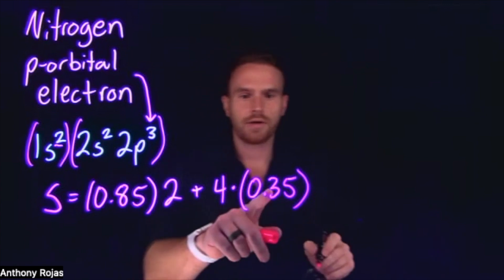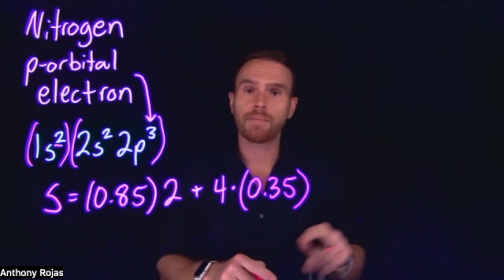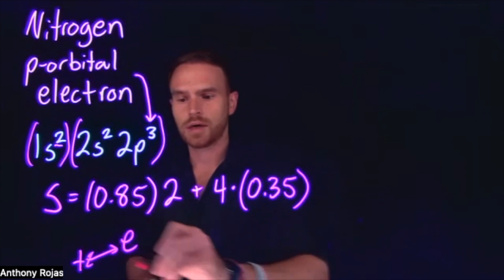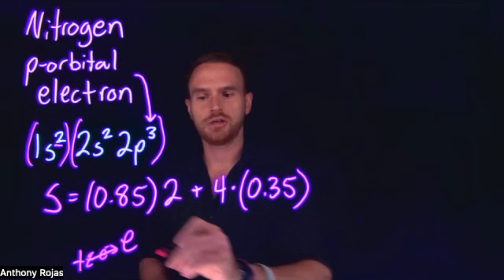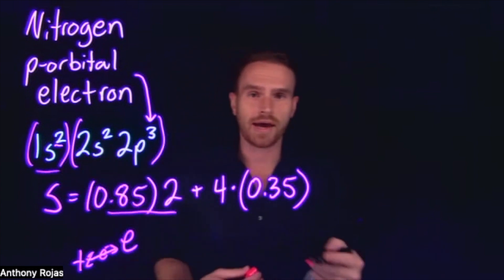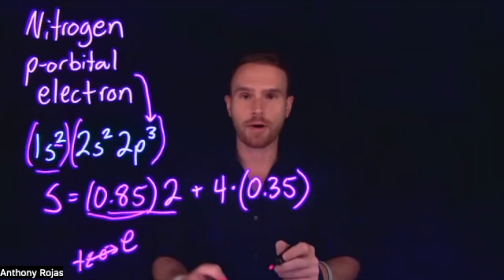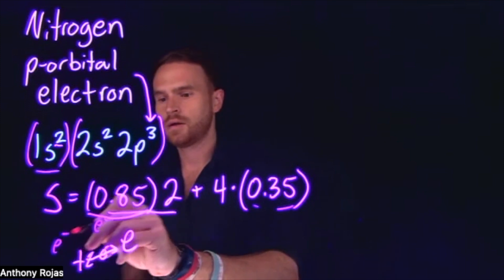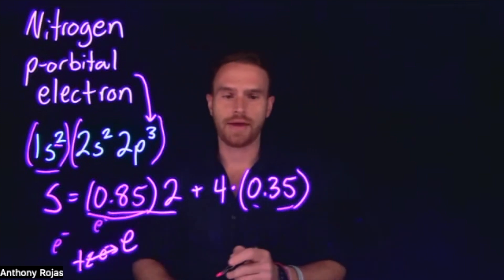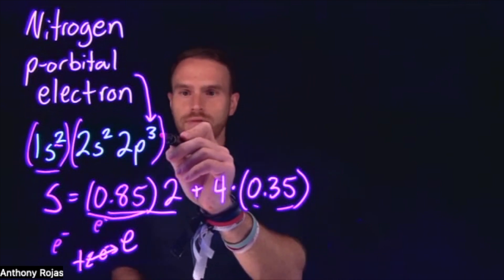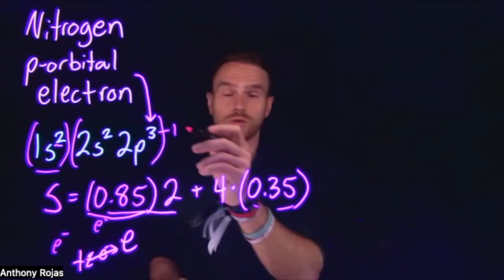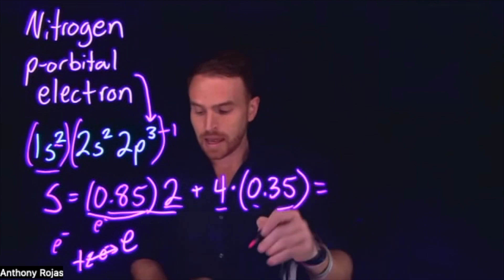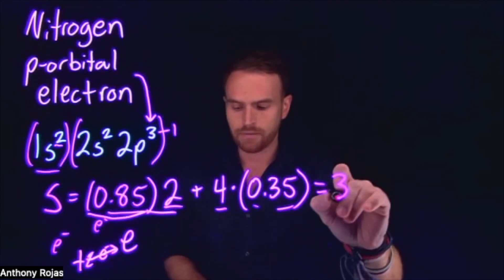This should make sense — electrons in the same group contribute less shielding because the biggest shielding effect comes from anything that blocks the attraction between the protons and the outermost electrons. The two 1s electrons that are between the nucleus and the outer shell contribute a greater numerical value (0.85 each) than same-shell electrons (0.35 each), because same-shell electrons occupy the same energy region as the electron of interest. Accounting for all six other electrons and carrying out this calculation gives us an S value of 3.10.